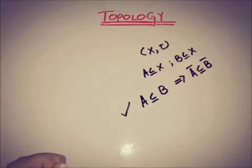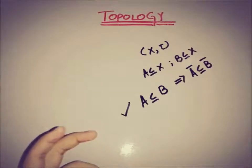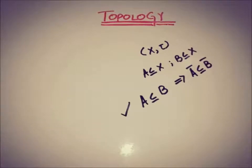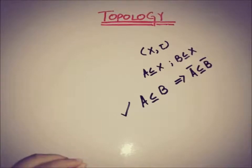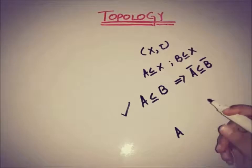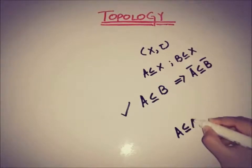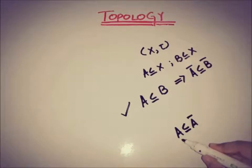Recalling the definition of closure: it is the intersection of all closed supersets of A, and it is the smallest closed set containing A. We also know that the set A is always a subset of its closure Ā.